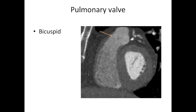The second valve as you go through the heart is the pulmonary valve, and this is the exit of the right ventricle that the blood takes. You can see it here with the orange arrow and the blue lines — you can just make out the pulmonary valve on this CT scan.